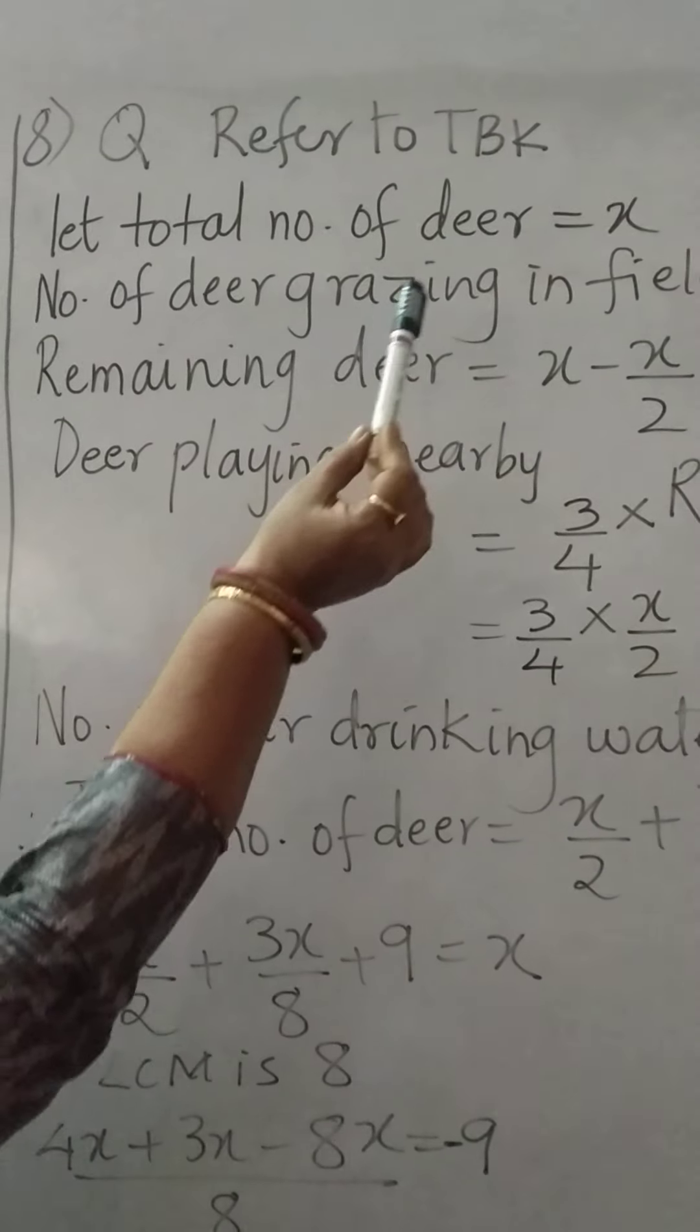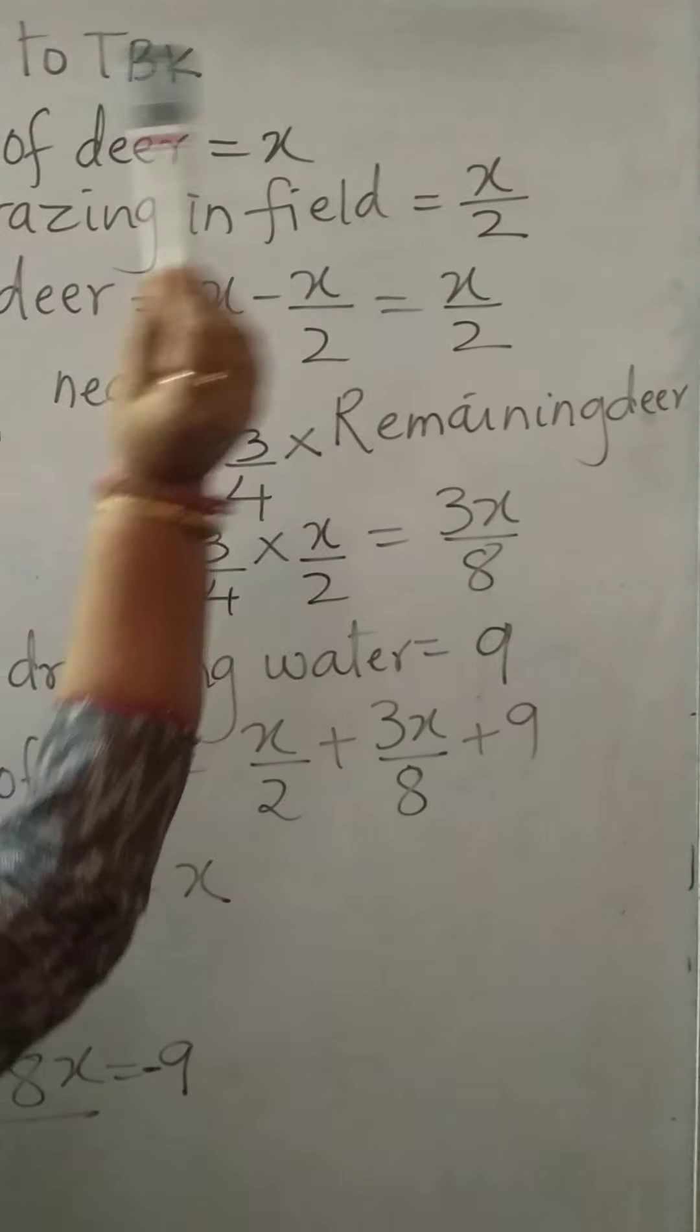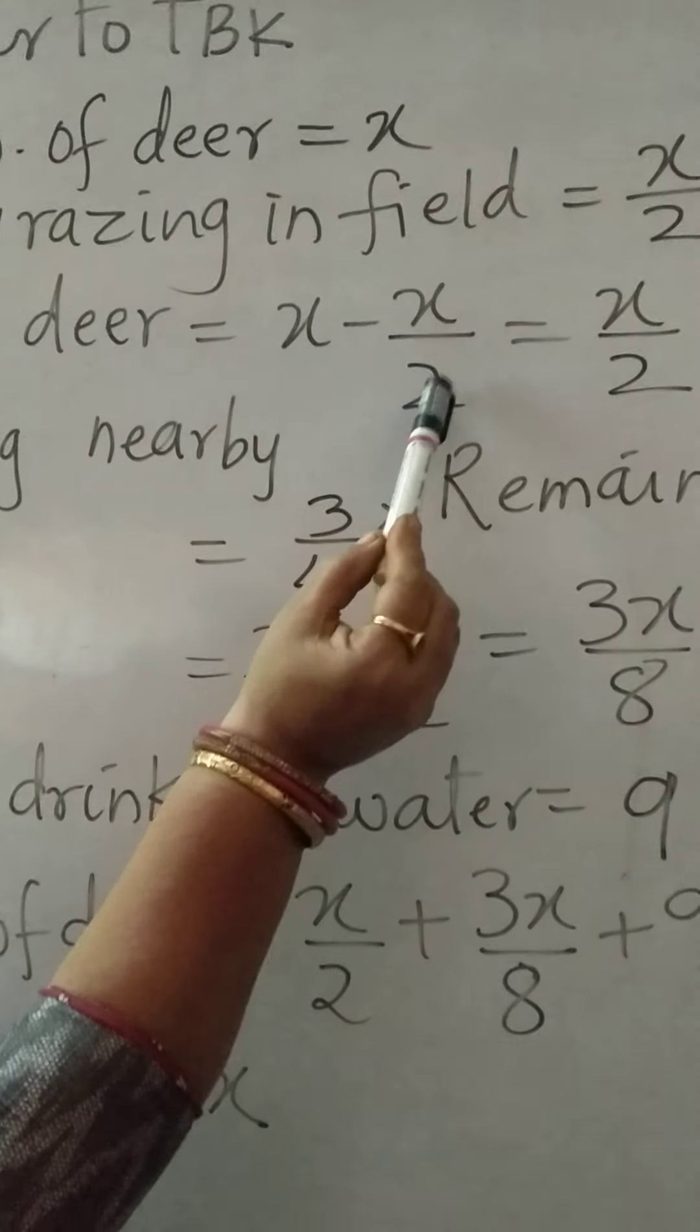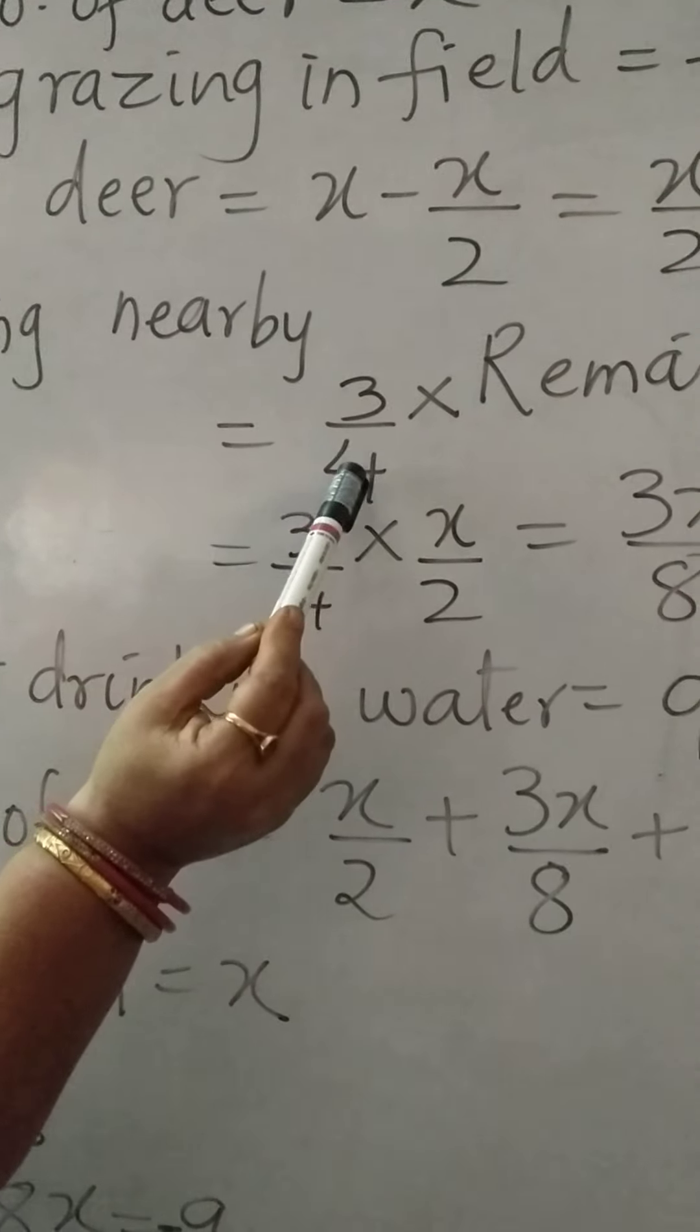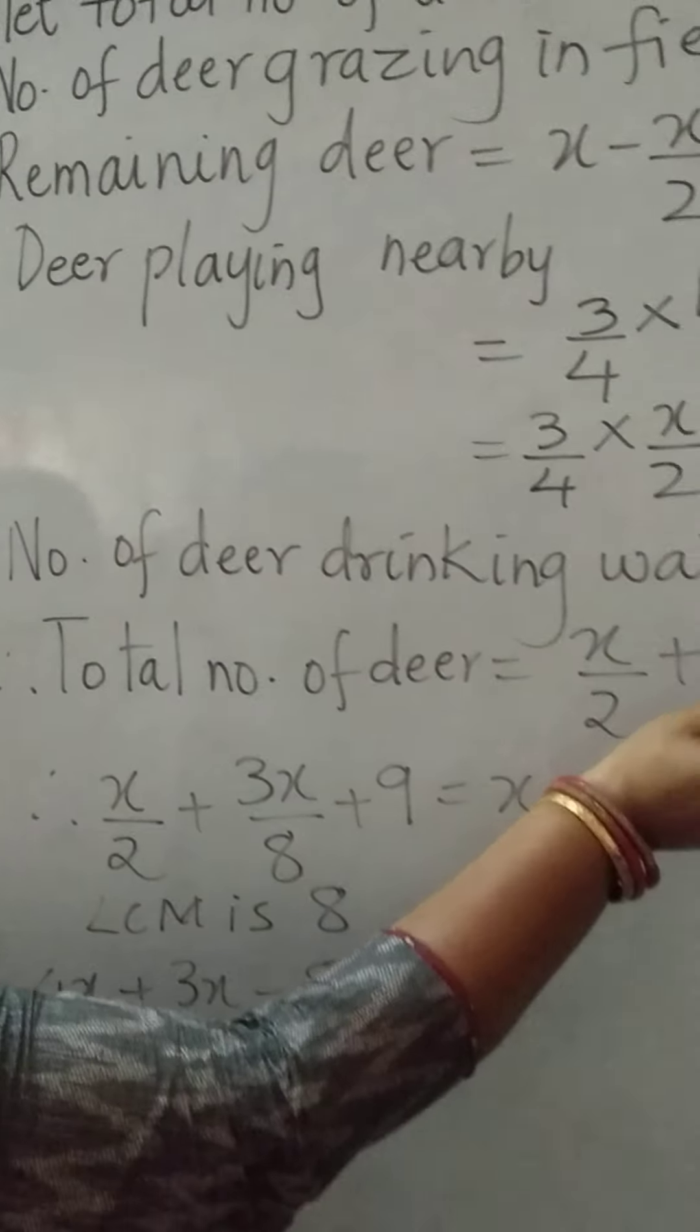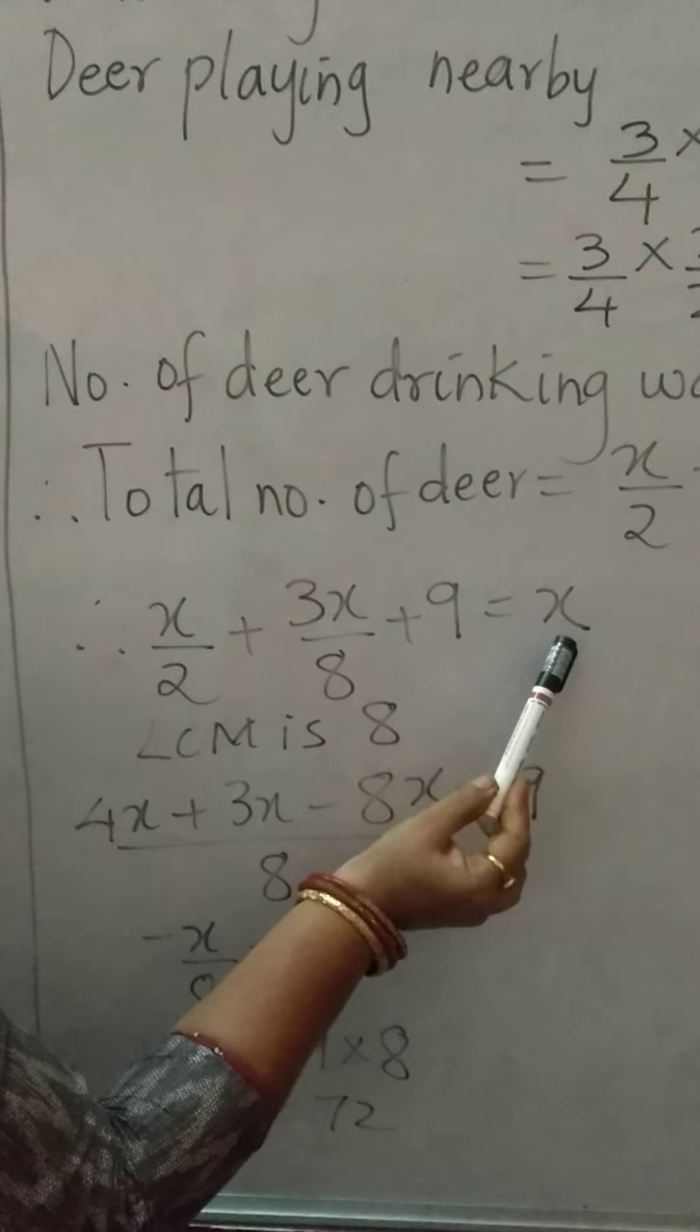Let the number of deer be x. Total number of deer is x. Number of deer grazing in field are half, so x upon 2. So remaining deer, this is total number of deer, these are grazing. So remaining will be x minus x upon 2 gives you x upon 2. Deer playing nearby 3 upon 4 into remaining deer, 3 upon 4 into x upon 2 gives you 3x upon 8. Number of deer drinking water are 9. So the equation is x upon 2 plus 3x upon 8 plus 9, and total number of deer how many? x.